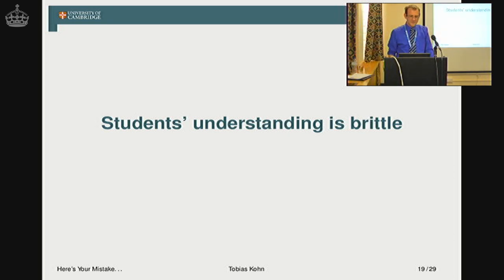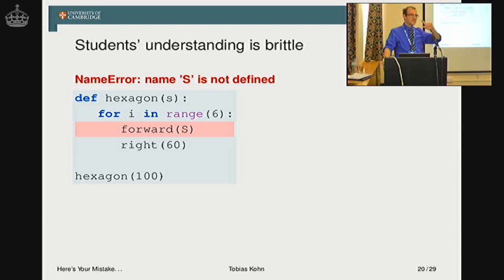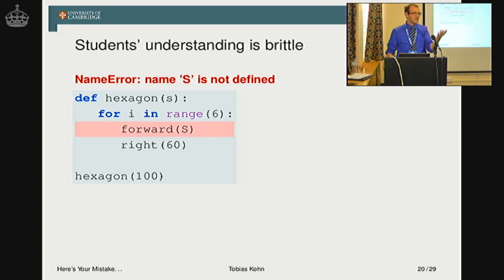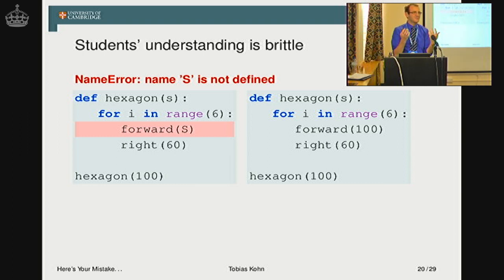But here's where the catch comes in: students' understanding of programming is extremely brittle. Here's one example from the data set I collected. 'Name S is not defined.' You can see it's just a question of case — they wrote a capital S where it should be a small s. How do you correct that? Of course, you just be consistent. But here's what the student did: instead of correcting the variable, the student just replaced it by the value he or she wanted to have in the code. For us it's not really clear why, but it shows they haven't really understood the problem.